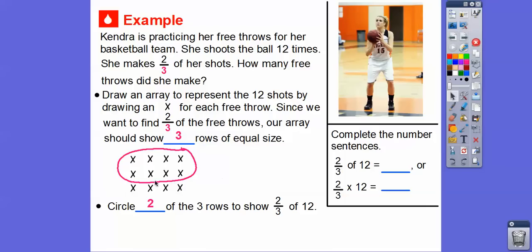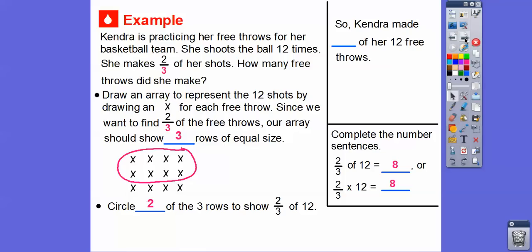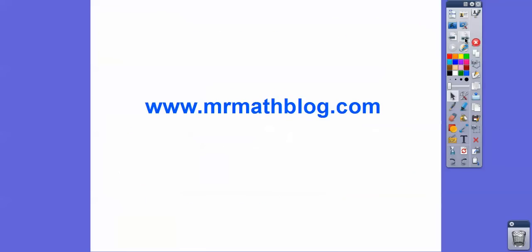And then so complete the number sentence. So two-thirds of 12 is, let's see, one, two, three, four, five, six, seven, eight. It's eight. And remember, two-thirds of is the same as two-thirds times 12. So it's going to be eight right there. All right, so let's answer the question. So Kendra made eight of her free throws.